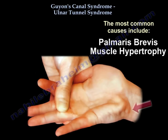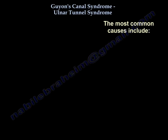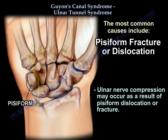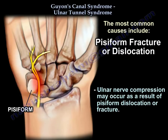Palmaris brevis muscle hypertrophy is another cause, as illustrated. Pisiform fracture or dislocation — ulnar nerve compression may also occur as a result of pisiform dislocation or fracture.